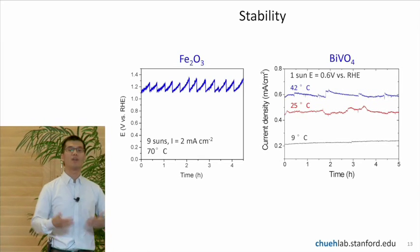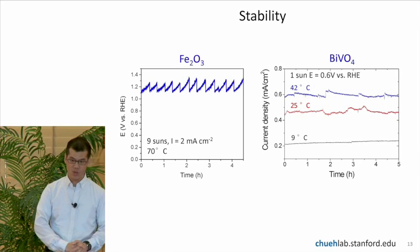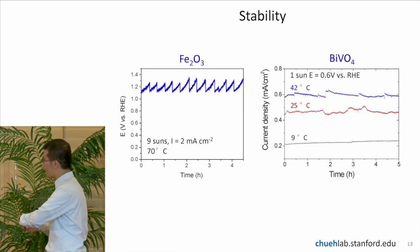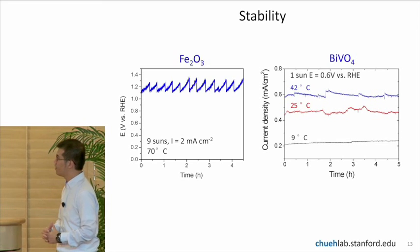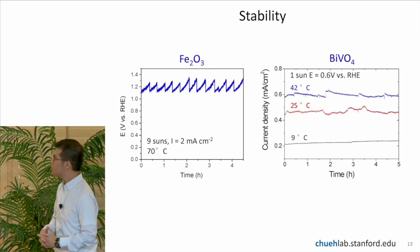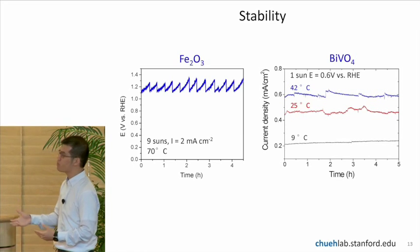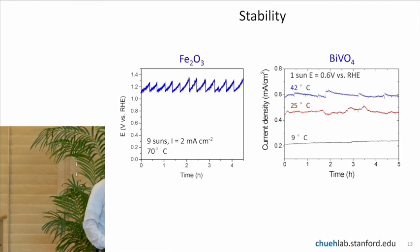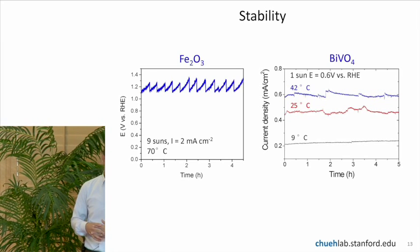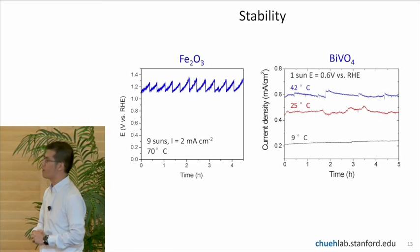So people always ask me, well, increasing the temperature generally decreases the stability. Well, it turns out that's not so much the case here. For both the iron oxide and the bismuth vanadate, the stability is actually rather good. So on the left plot, we have the iron oxide. This is where we held the current constant and we monitored the voltage. For the bismuth vanadate, we did the opposite. We held the voltage constant and monitored the current. And just because two different people did the experiments.